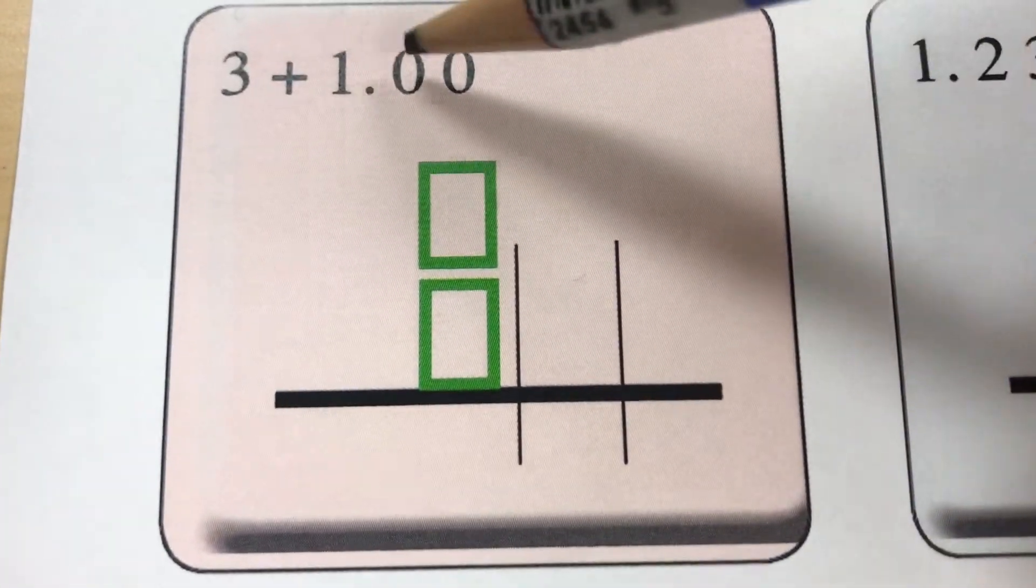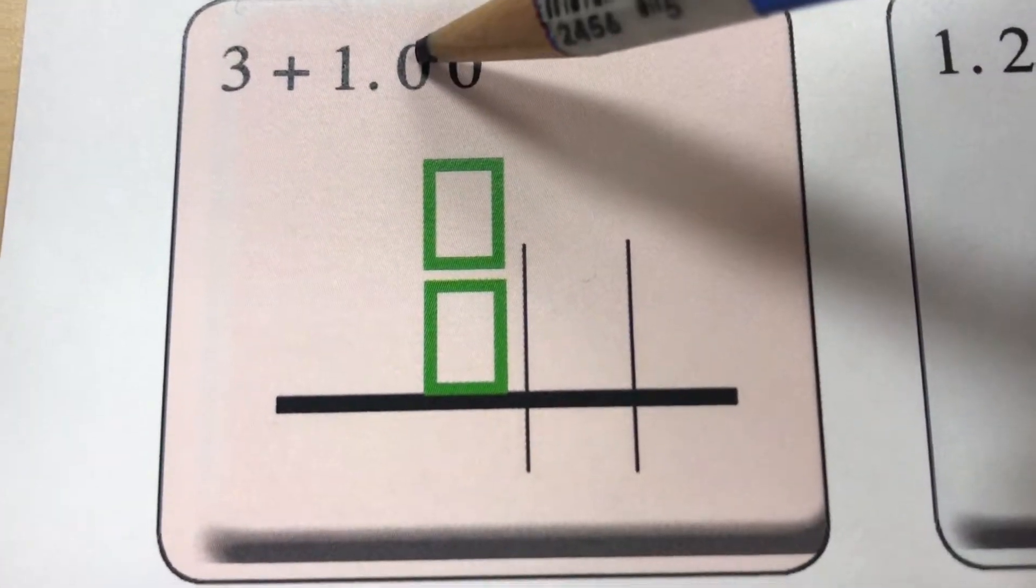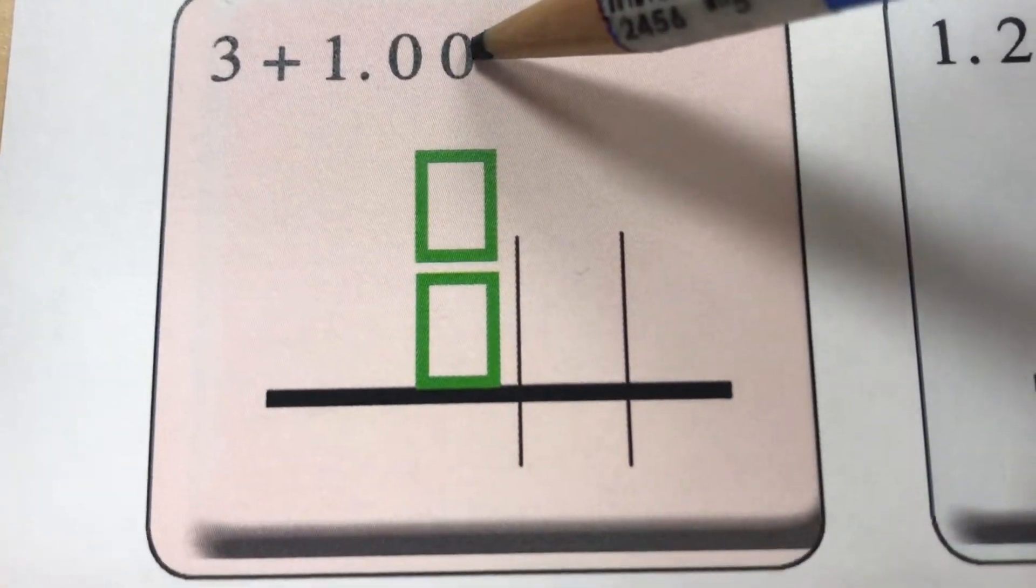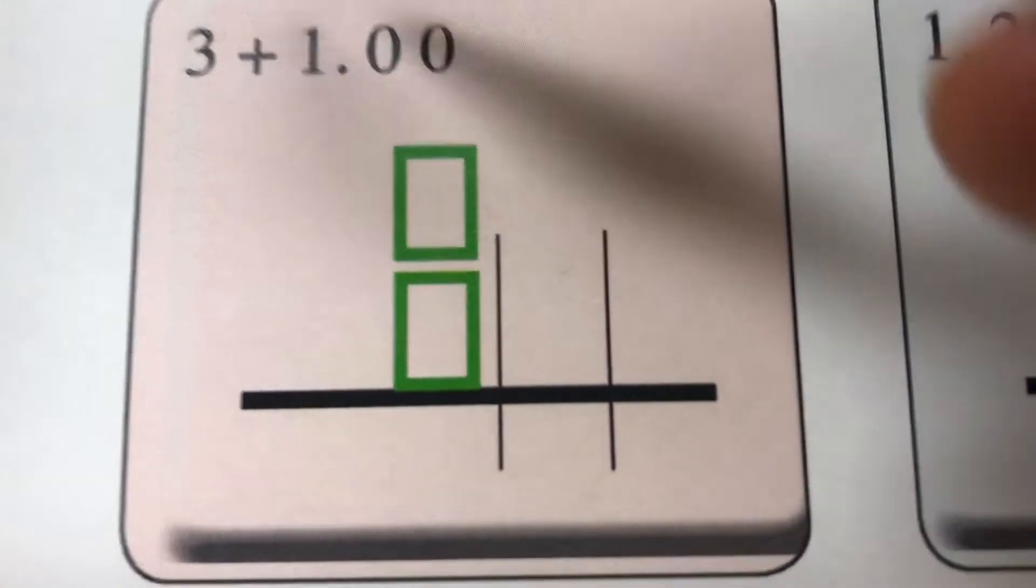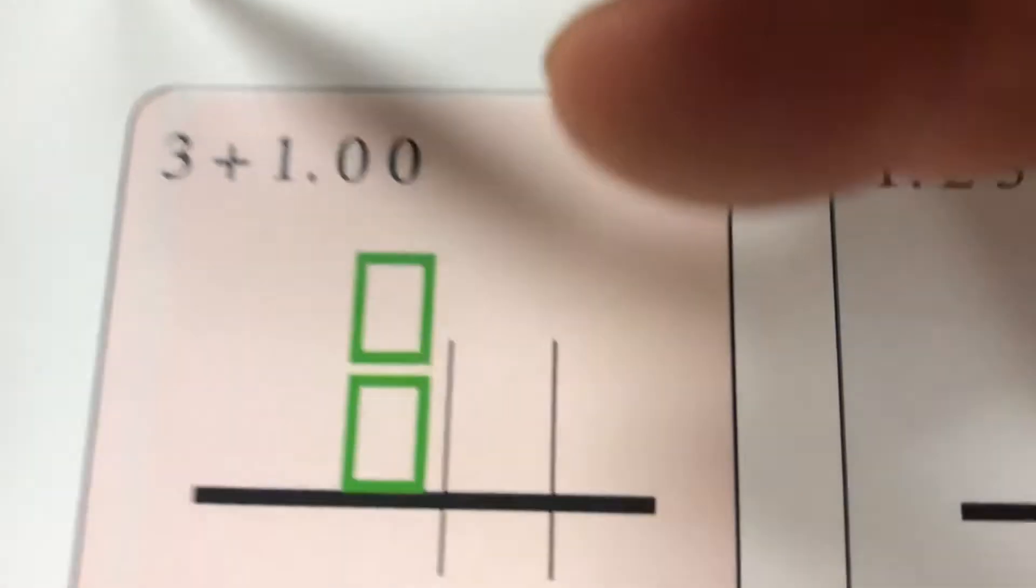Three plus one and zero tenths, zero hundredths, or really should be three plus one. To make that less abstract, let's use that same template.